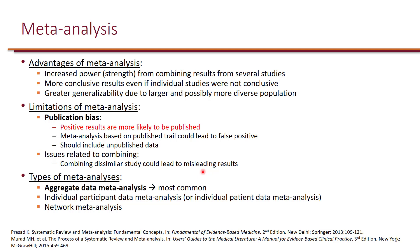When it comes to meta-analysis, there are generally three types. The most common type is aggregate data meta-analysis, where only the average data from each study is combined — for example, the average age and the average outcome from each study. We can also have individual participant data meta-analysis, which includes information from every single patient in every study. There is also network meta-analysis, used to compare multiple drugs that have not been compared head-to-head in a single clinical trial. Network meta-analysis and individual patient data meta-analysis are beyond the scope of this course, so we will focus on aggregate data meta-analysis.